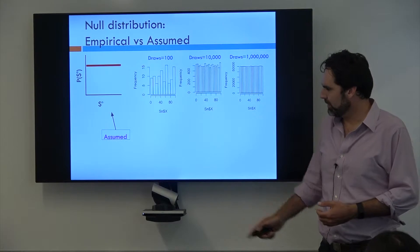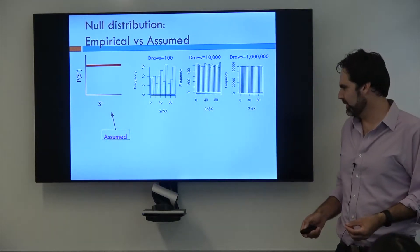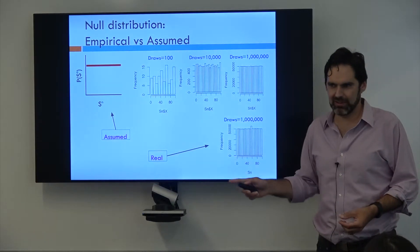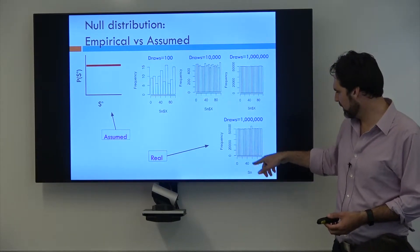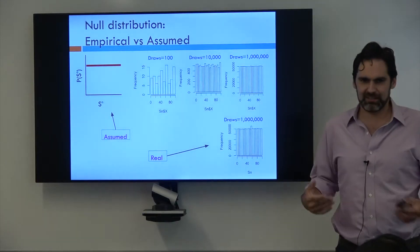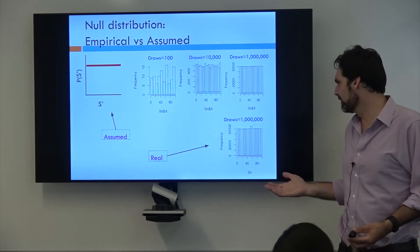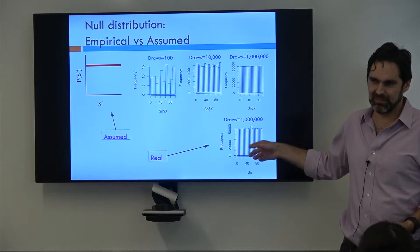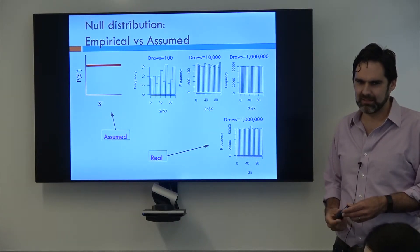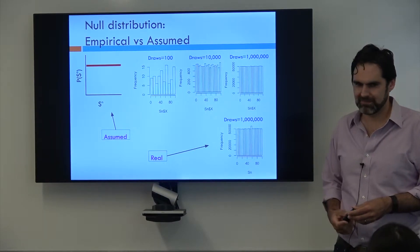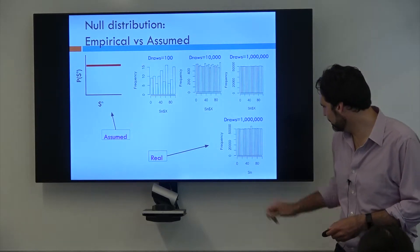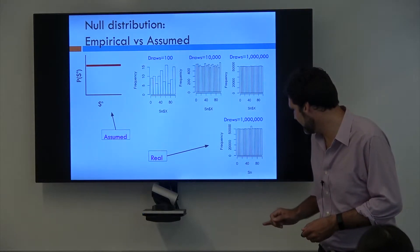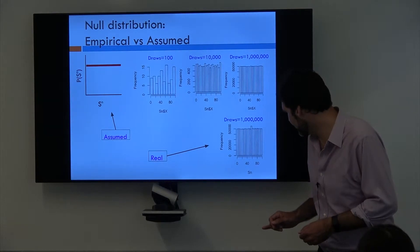However, the problem with assumed distributions is they never quite match real distributions. This might actually be the real distribution of asking a million people for a value between 1 and 100. It's really close to the assumed distribution, but there's a little spike here in the 65 to 70 range. That's because as humans, we don't necessarily generate numbers from a uniform distribution. It looks like it's around 50, but 50 is right there. It's actually between 65 and 70, I think.